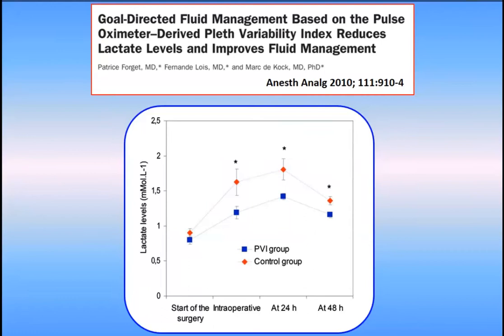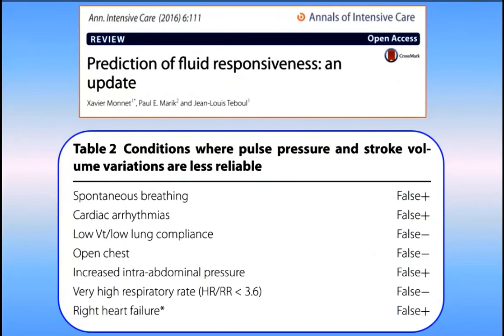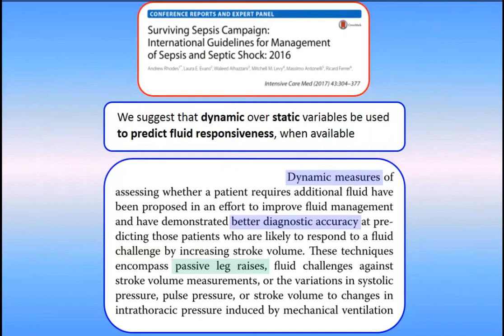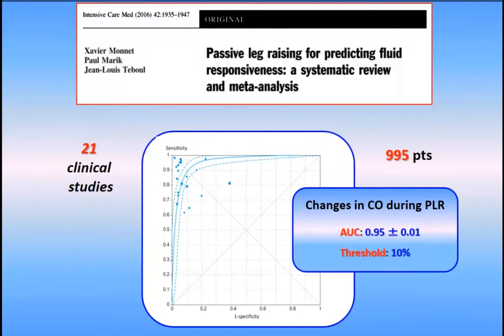Of course, there are many limitations to these dynamic variables, including false positives and false negatives. This is why the passive leg raising test — PLR — can also be used. It is now recommended by the Surviving Sepsis Campaign to assess fluid responsiveness. In a meta-analysis published with Paul Marik and Xavier Monnet, we showed it is a good test for predicting fluid responsiveness, with an area under the ROC curve with a threshold value of 10%.